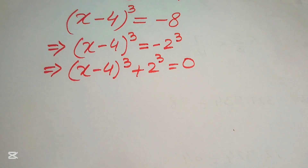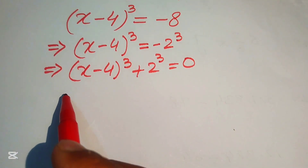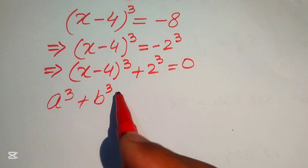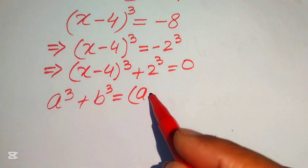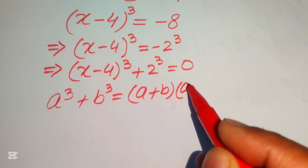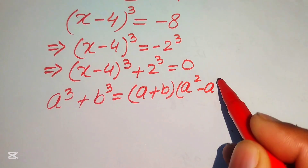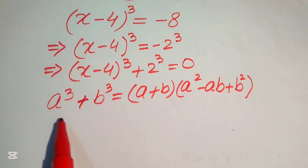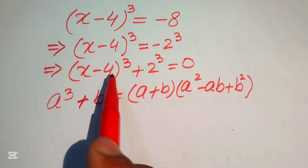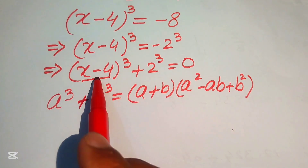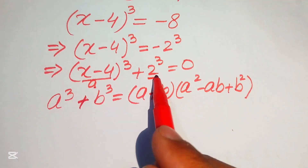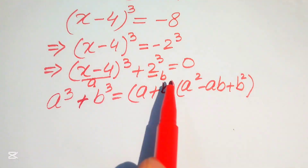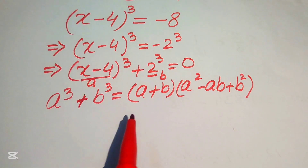In the next step, we apply the sum of cubes formula: a³ + b³ = (a + b)(a² - ab + b²). Looking at our equation, the base of the first term equals a and the base of the second term equals b, so our a = (x - 4) and our b = 2.